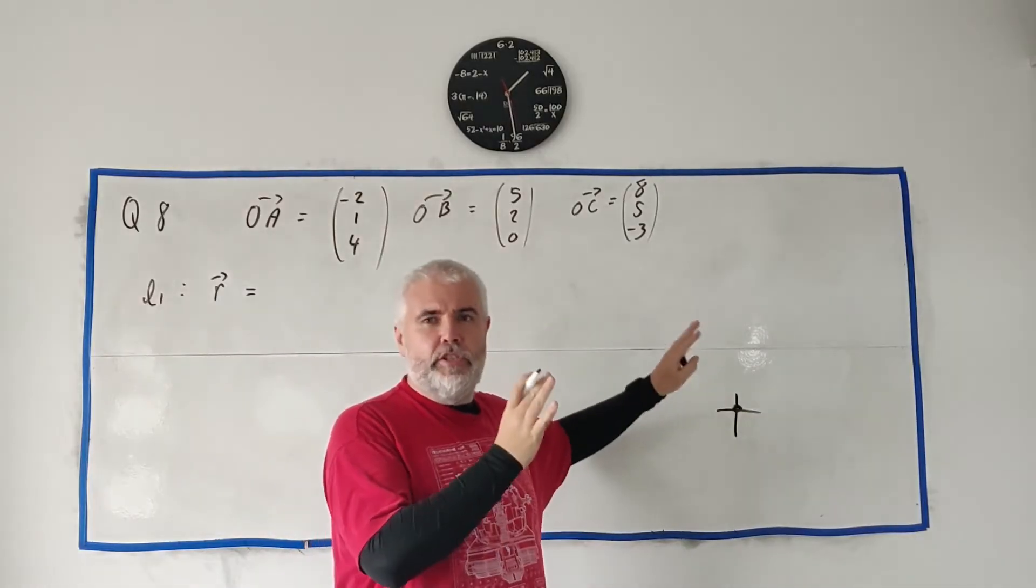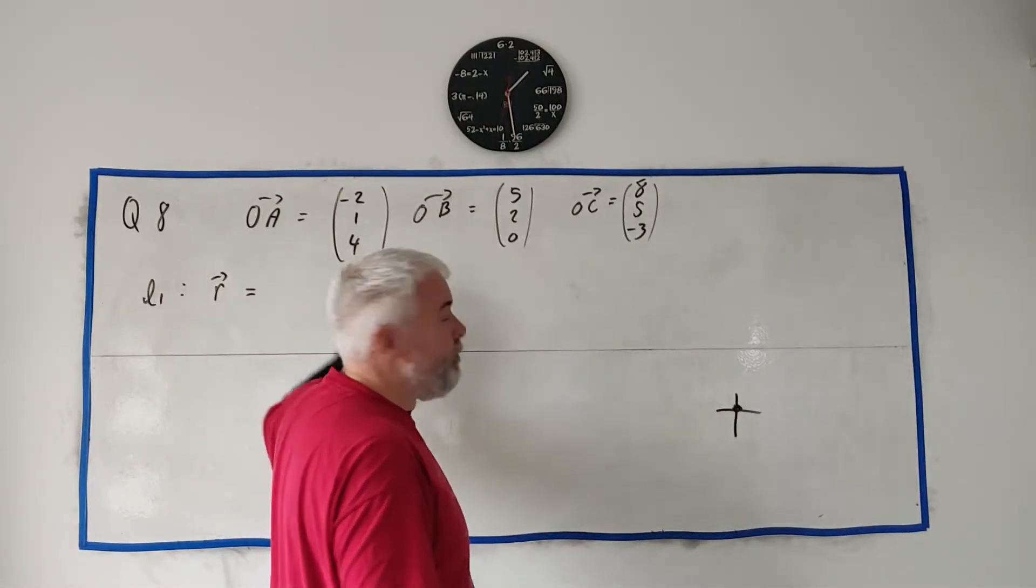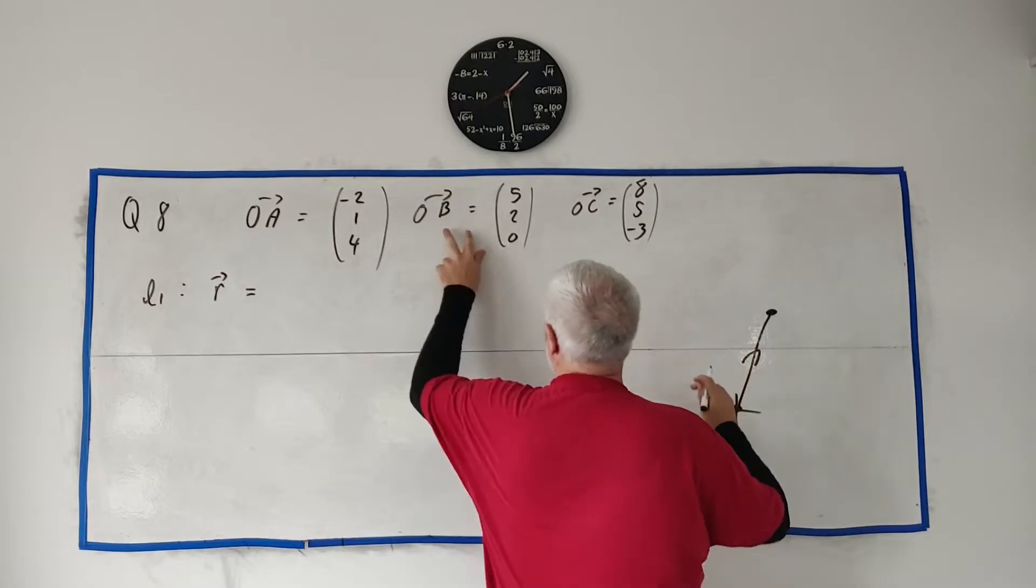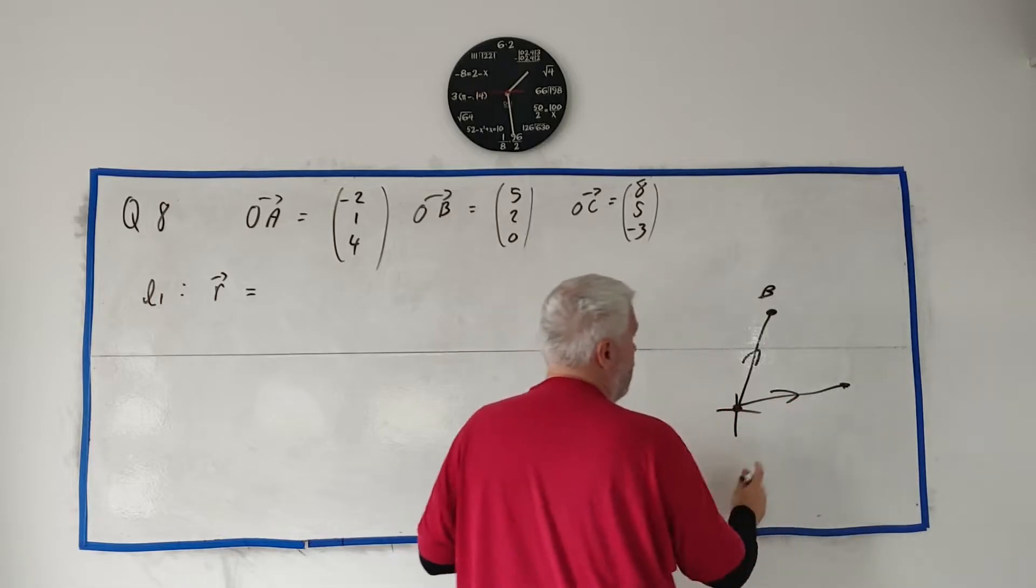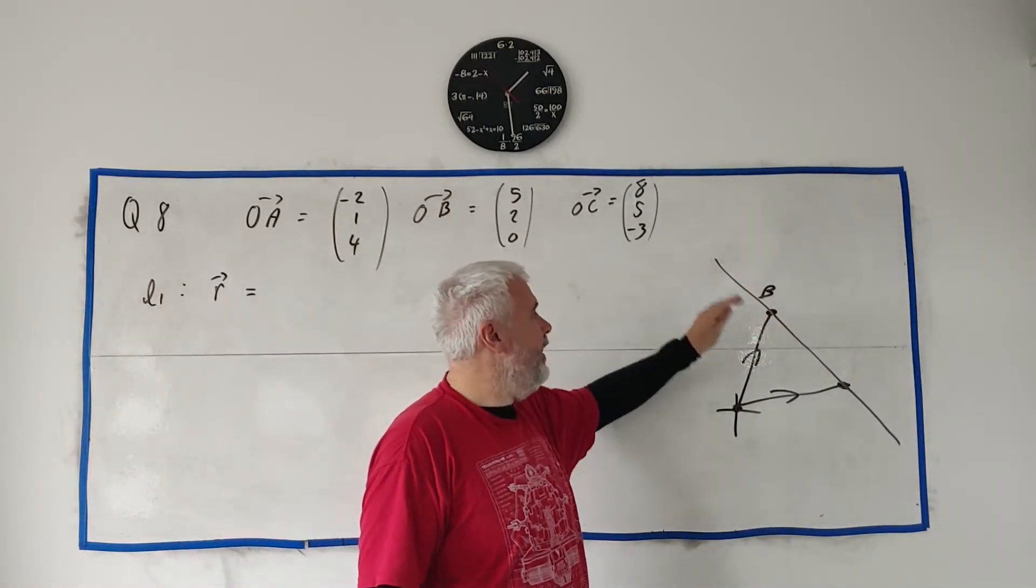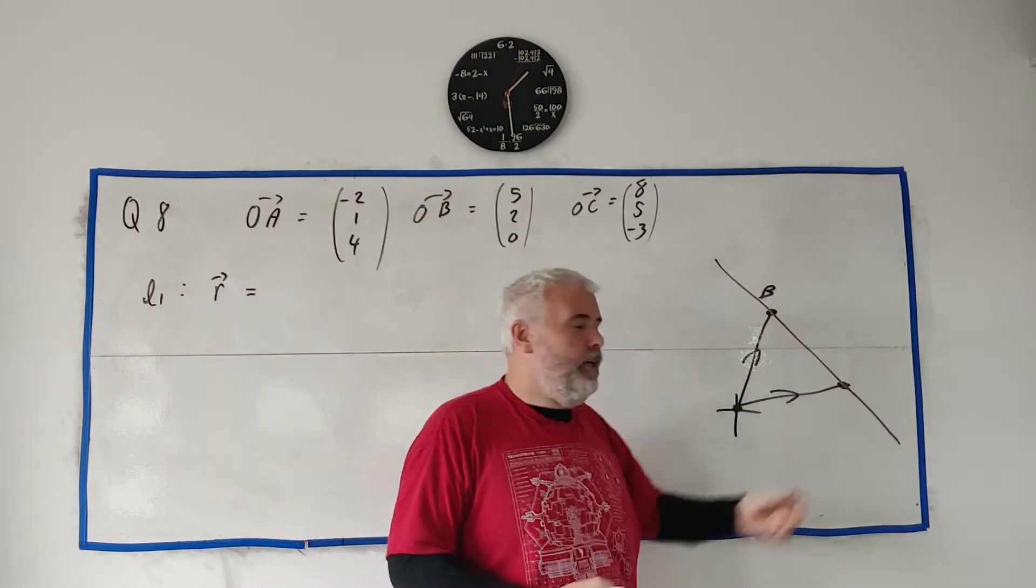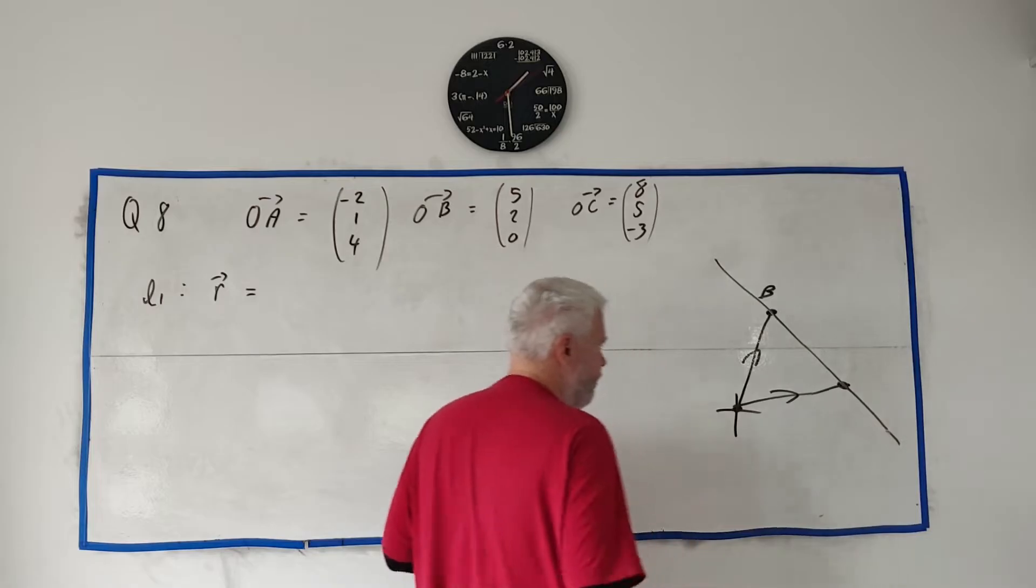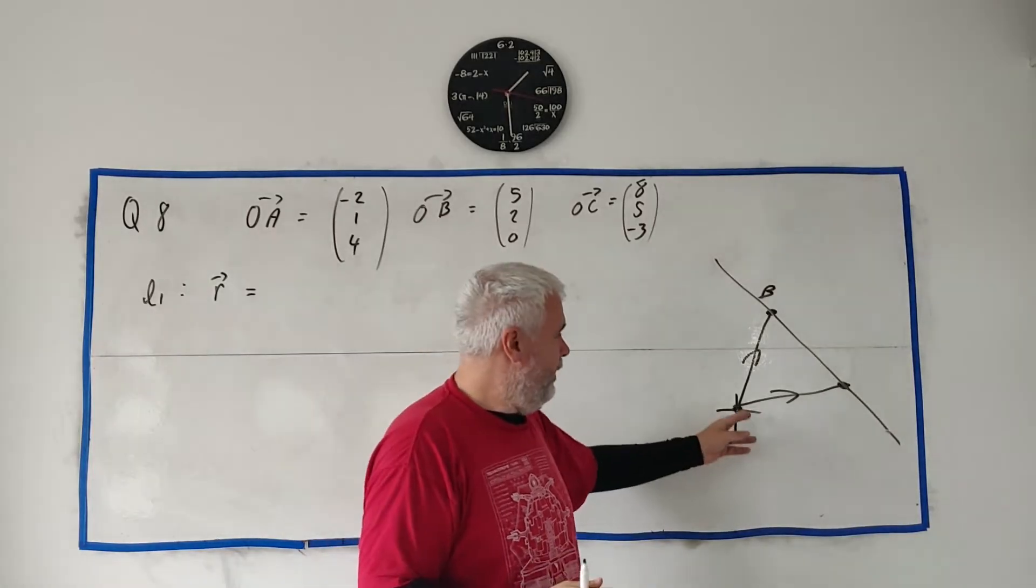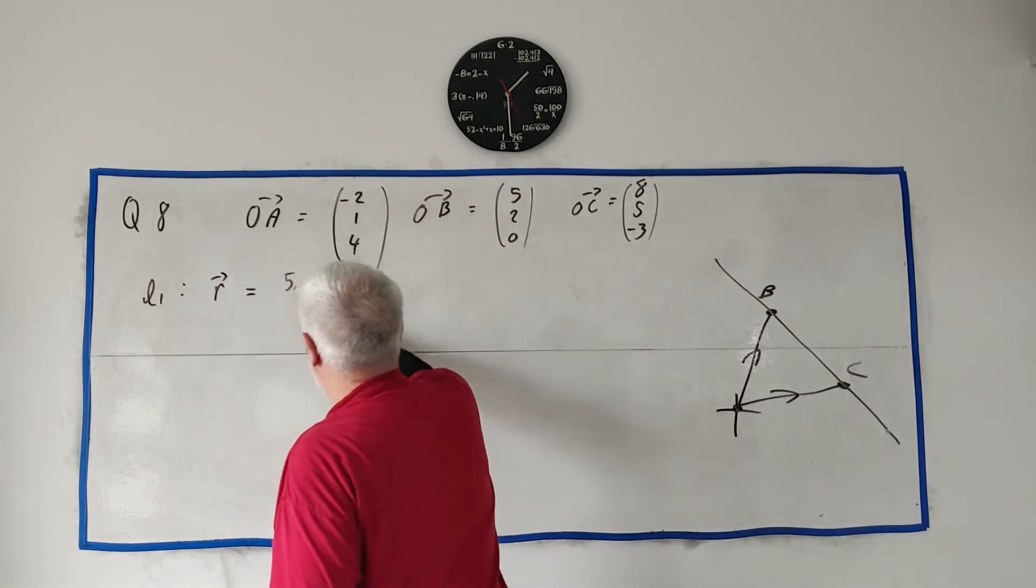They told us that the line L1 passes through the point B and the point C. These are the position vectors of them. Find a vector equation of L1. The vector equation of L1, we always write equations of lines using r equals something. I'll just do a quick drawing over here. If you think of 0, 0 is down here.